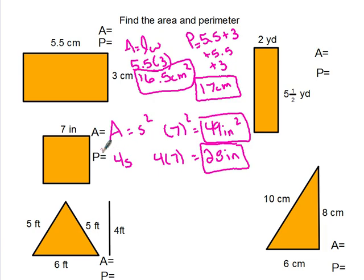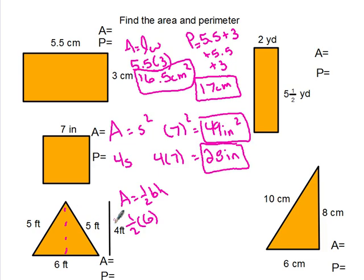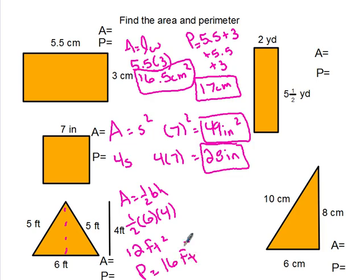You're just looking at your formulas and plugging in what you know. For the triangle, area equals half base times height. The base is always the bottom — we substitute 6 for B. Your height always goes straight up from the base, represented here by 4. Half times 6 is 3, and 3 times 4 is 12 — so that's 12 feet squared. Perimeter: add up all the sides — 5 plus 6 is 11, plus 5 is 16.